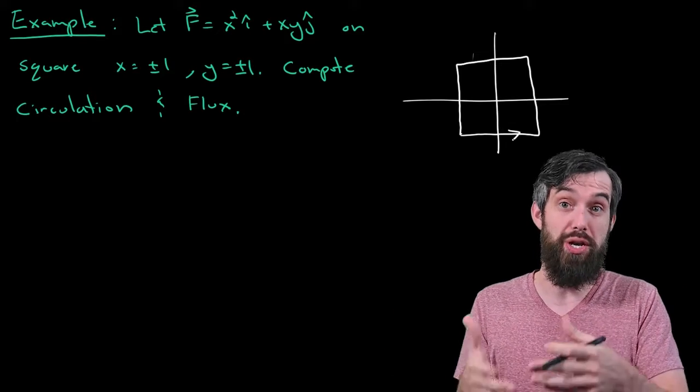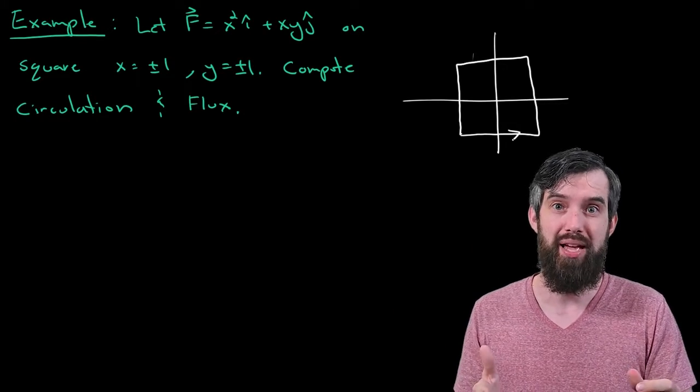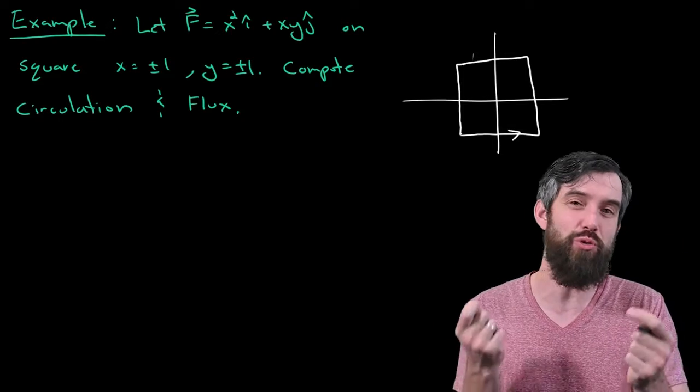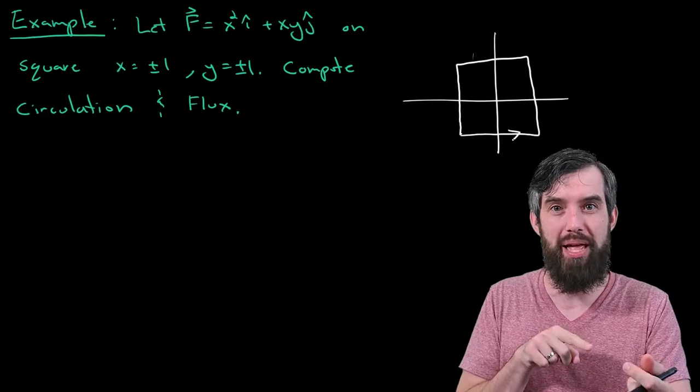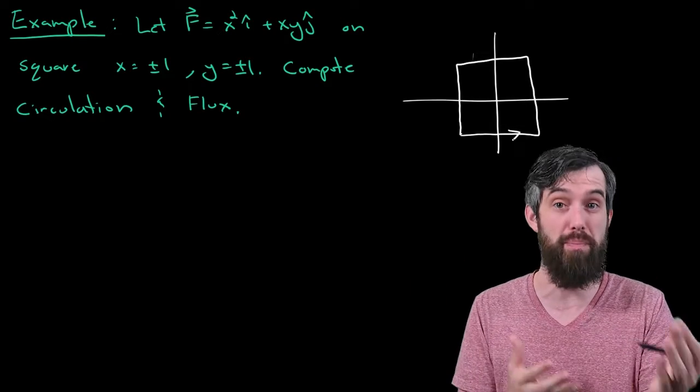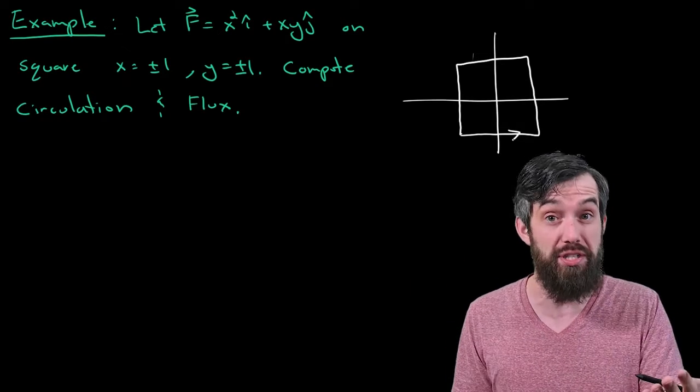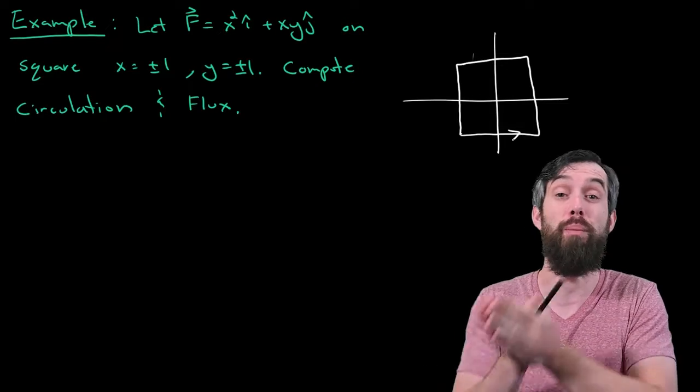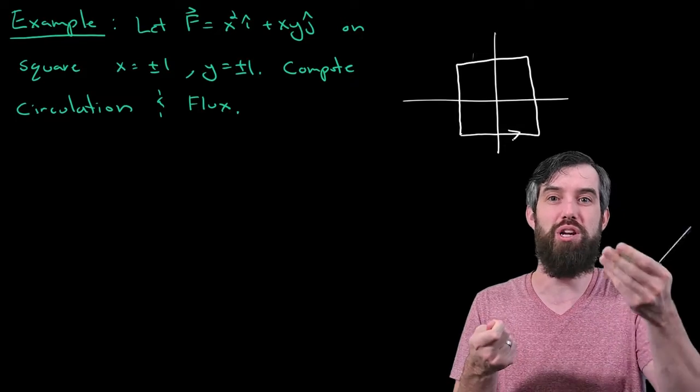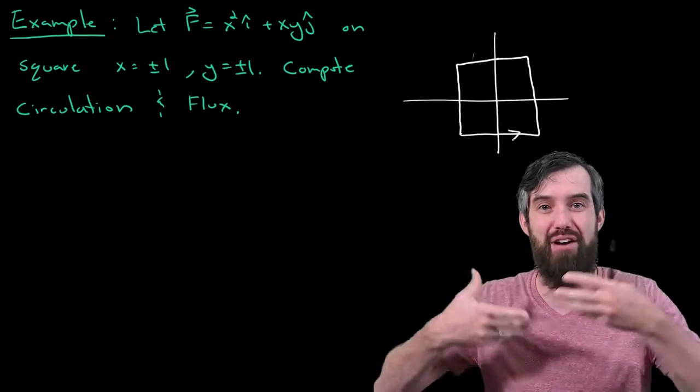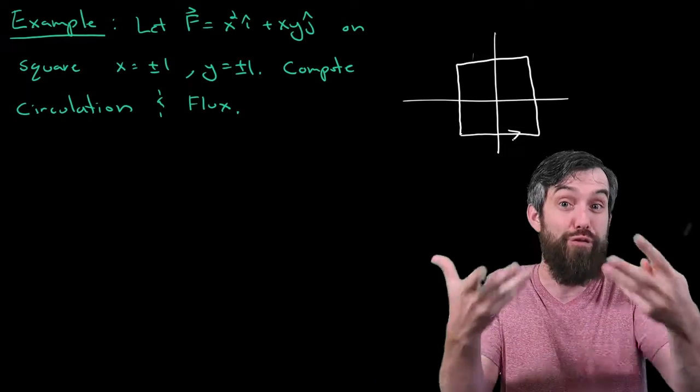Now, we could compute the circulation and the flux without using Green's Theorem if we wanted to. It's a little bit tedious, and the reason why it's tedious is that the curve is not, for example, just a circle. It's a square, and so it has four different components. So if you wanted to, you could go and compute out the circulation, and you could compute out the flux as well, using four different components of the curve, and then it would be having four integrals, you add those four results together.